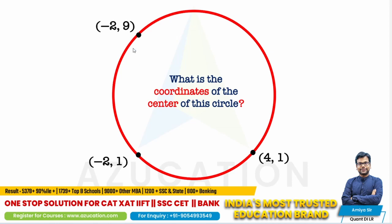Can you find the coordinate of this circle which is passing through (-2,9), (-2,1), and (4,1)? I would say please pause the video and try to solve this question. I hope you have paused this question, solved this question.